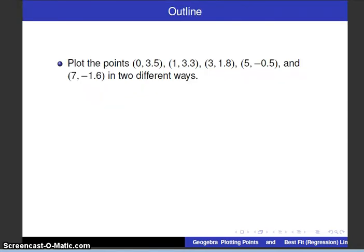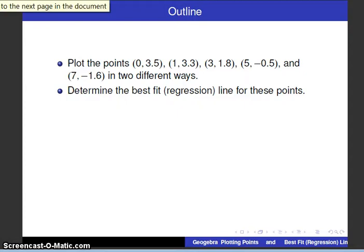So here's the outline of what we're going to be doing. We're going to just plot five points to keep this relatively short, and then we're also going to plot these points in two different ways. The second way, we'll actually use the spreadsheet view in GeoGebra, and then we're also going to be determining the best fit regression line for these points.